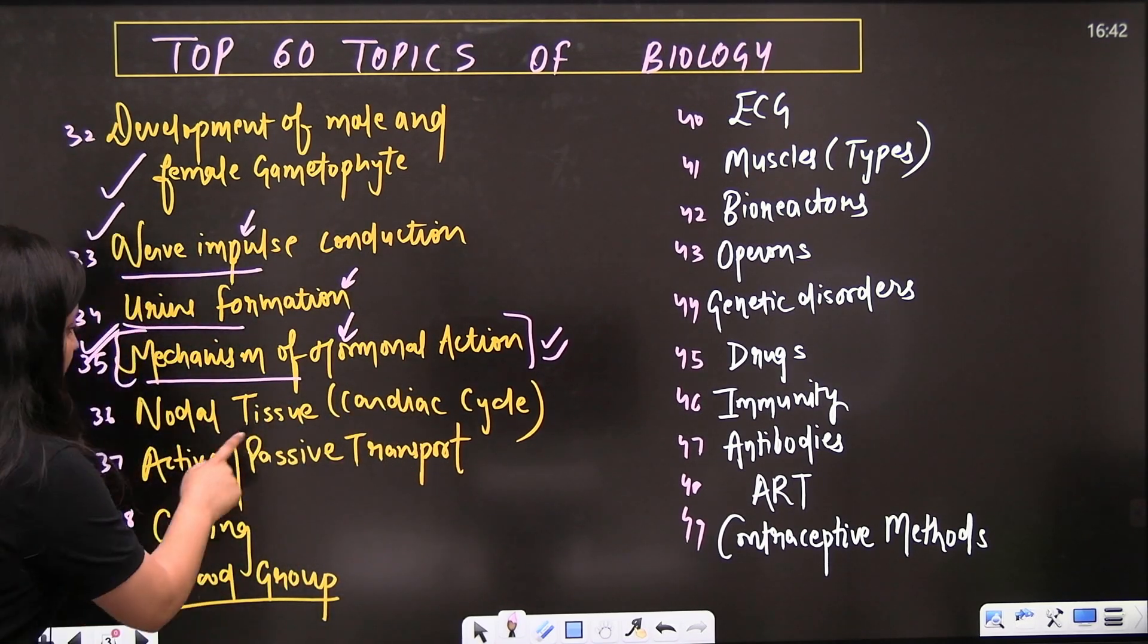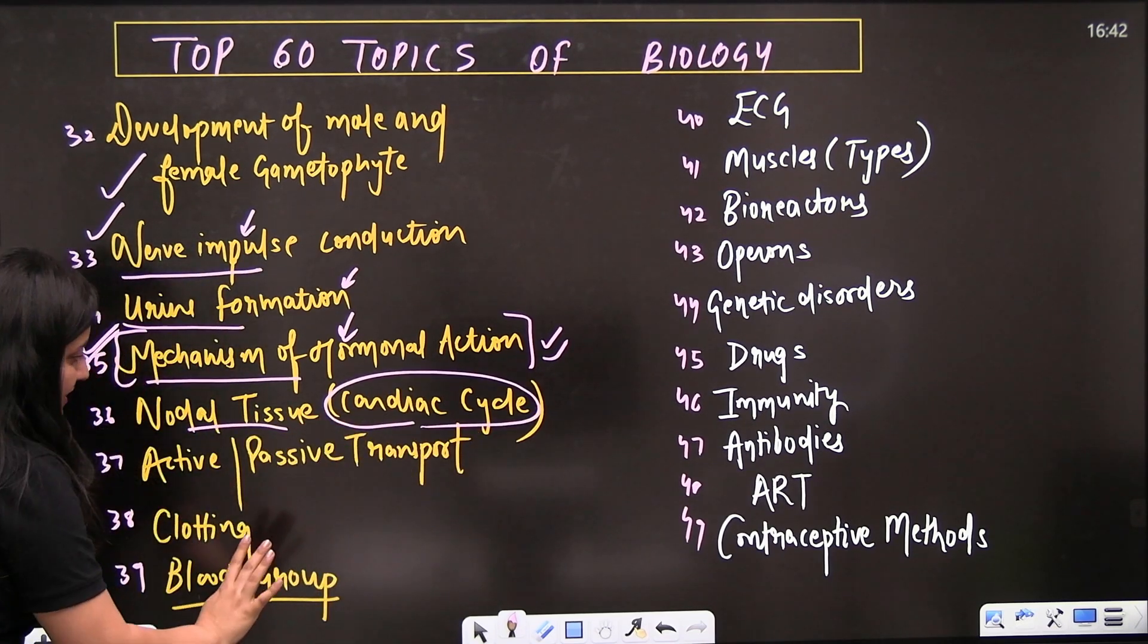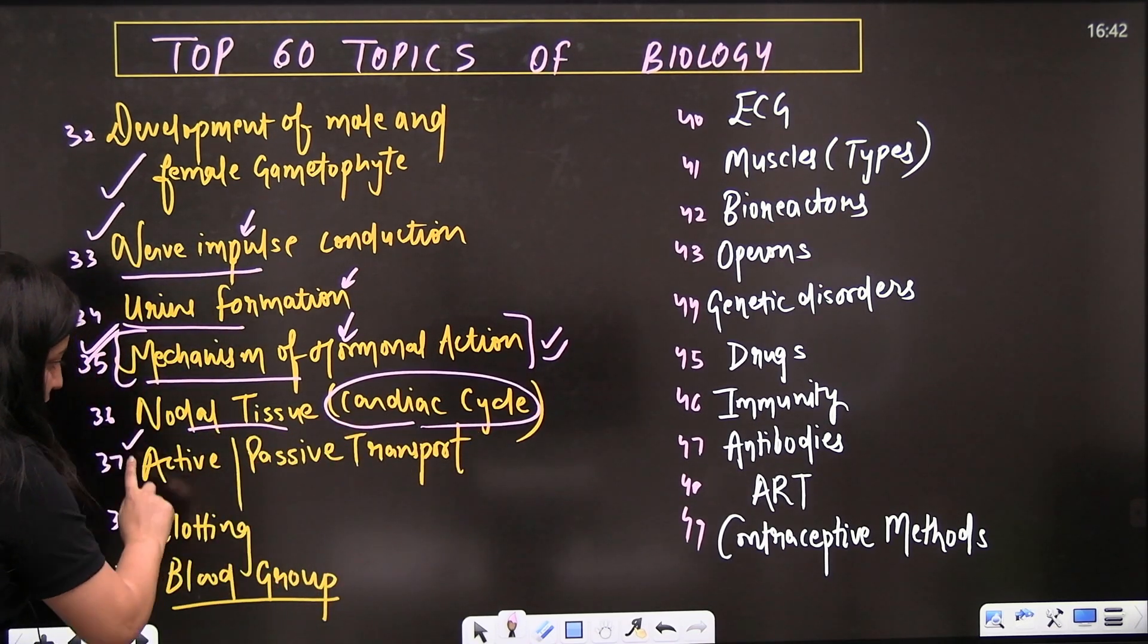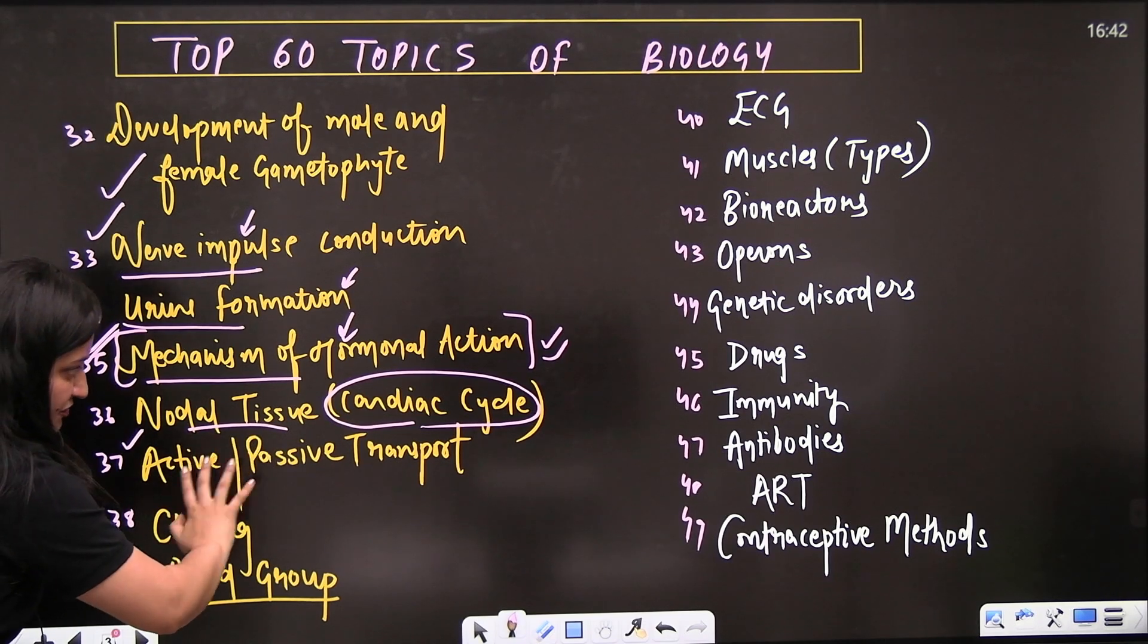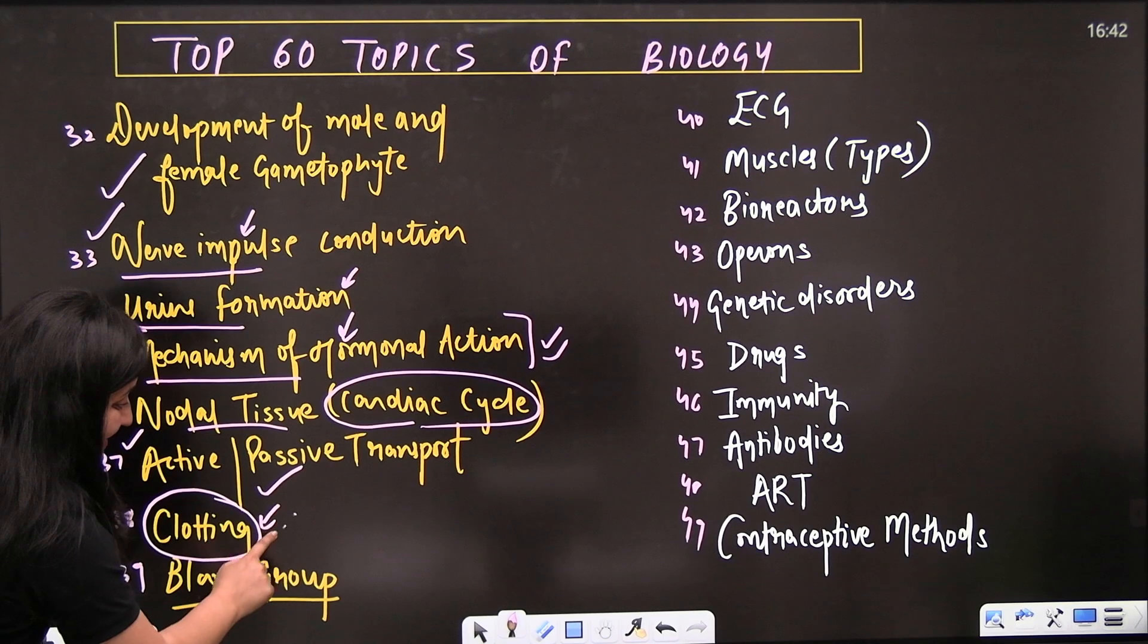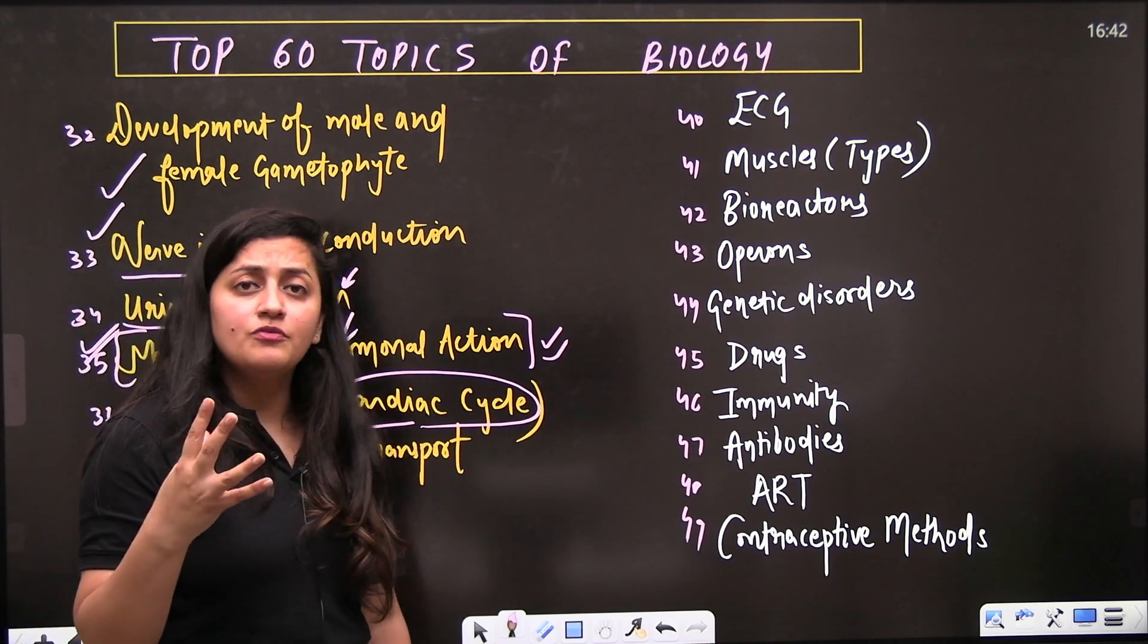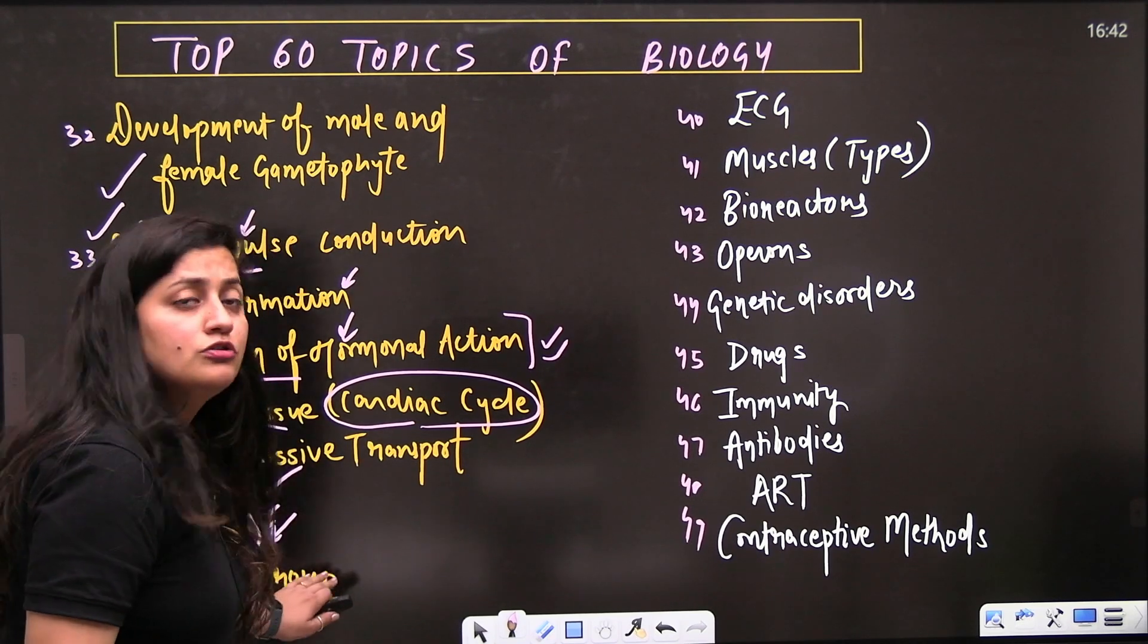Then the nodal tissue - if you understand nodal tissue, the cardiac cycle will be very easy for you. From the transport part, active-passive transport difference - the table given in NCERT is important. Blood clotting - the complete cascade is important.